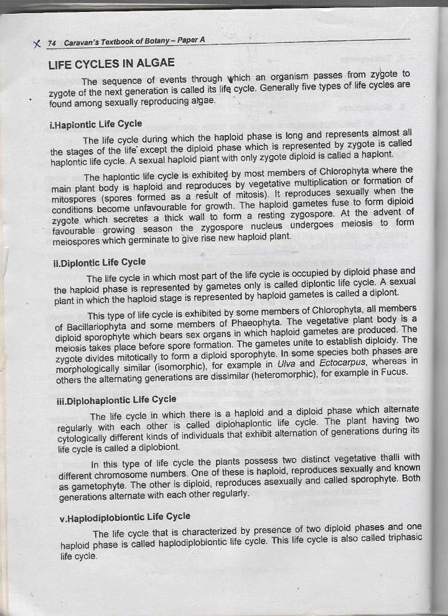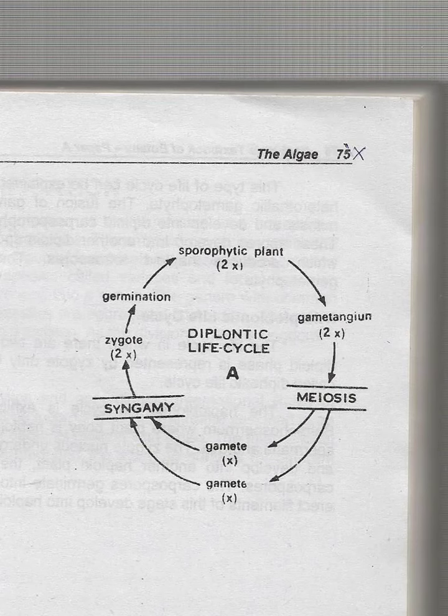For example in Fucus: it is an epiphytic plant. It is diploid and it also has gametangium, which is also diploid. When meiosis occurs, the result is haploid gametes. The gametes fuse to form a zygote, which is diploid. After germination, the diploid sporophytic plant grows again.